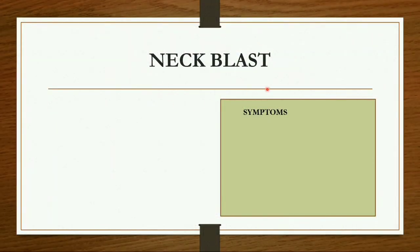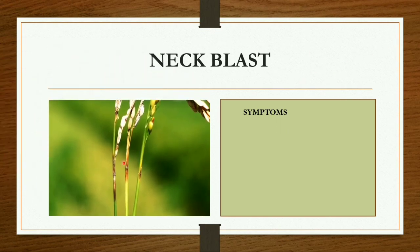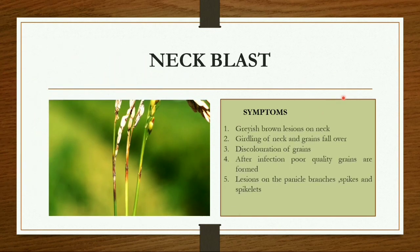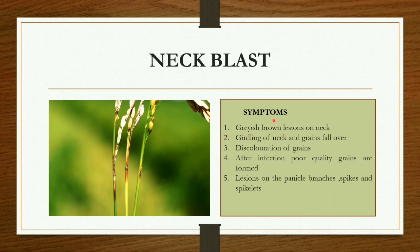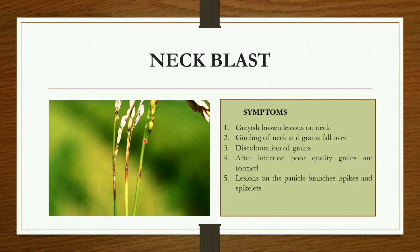Neck blast appears at the neck region of the rice plant. The symptoms include grayish-brown lesions on the neck, girdling of the neck, and grains falling over due to discoloration. You can observe the discoloration of the grains after infection. Poor quality grains are formed, which ultimately leads to less yield and less profit to the farmers. Lesions also appear on the panicle branches, spikes, and spikelets.